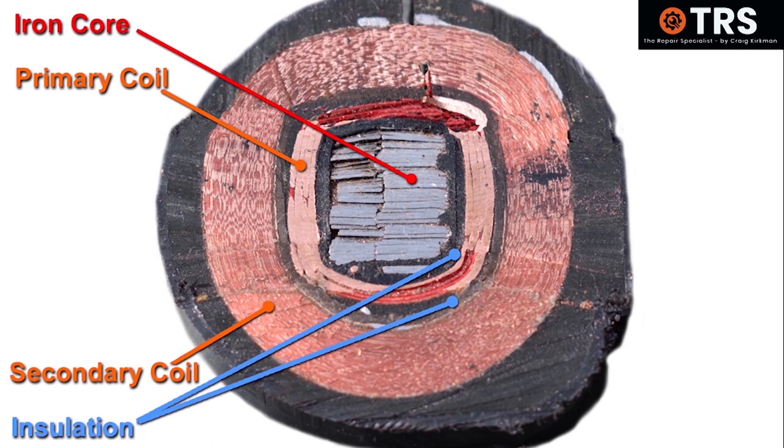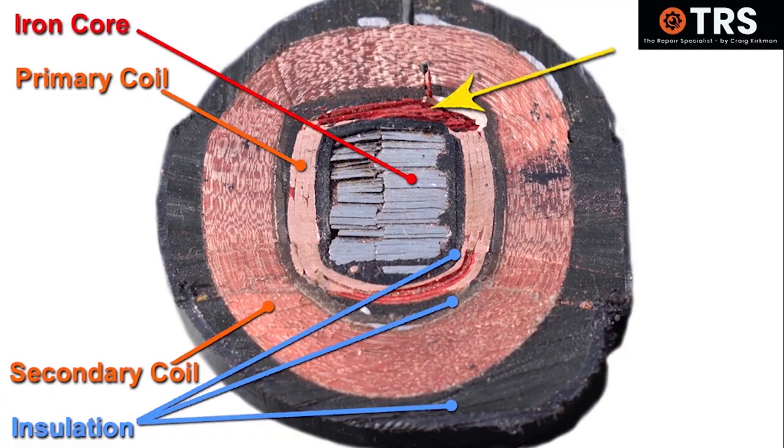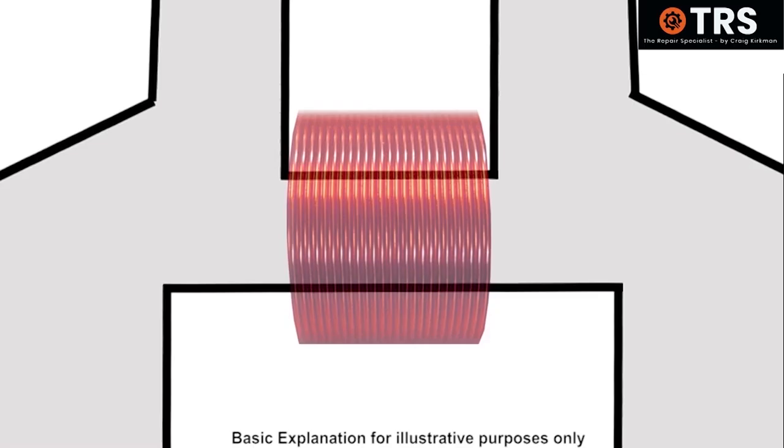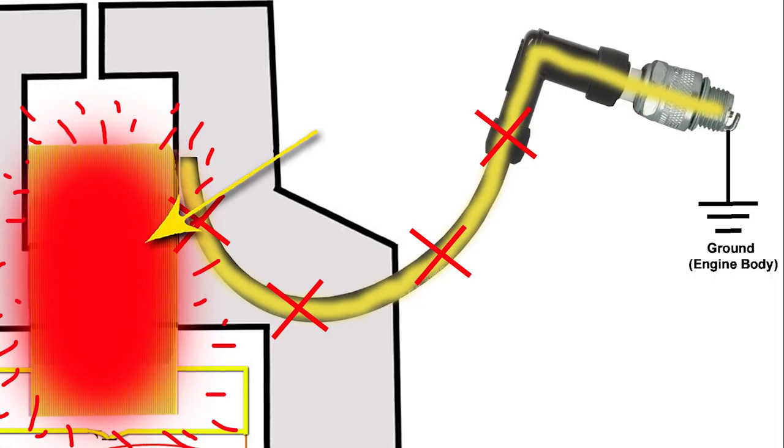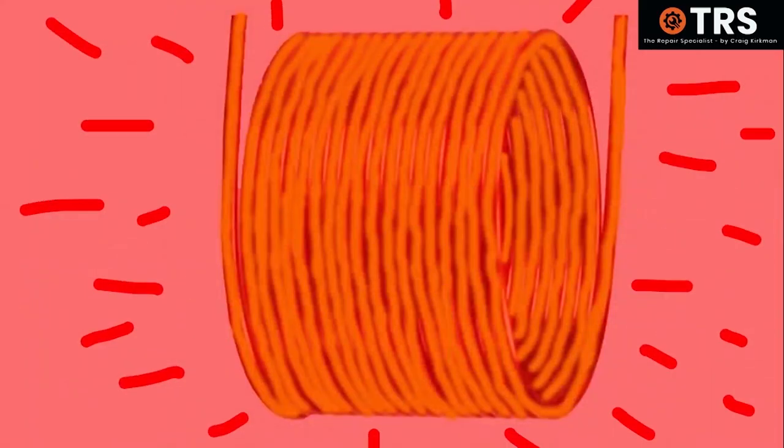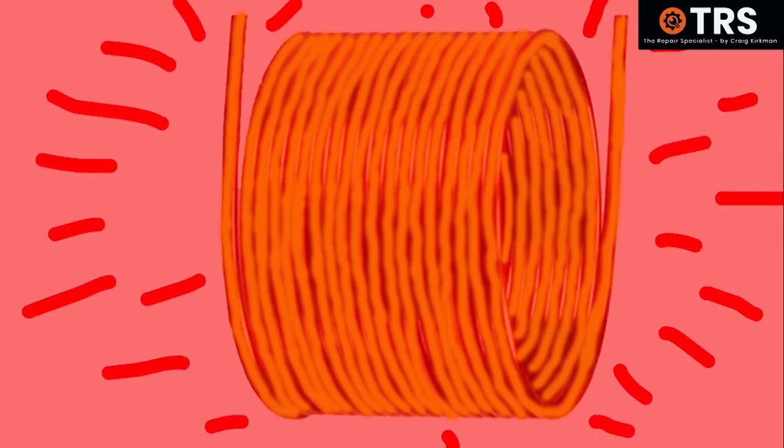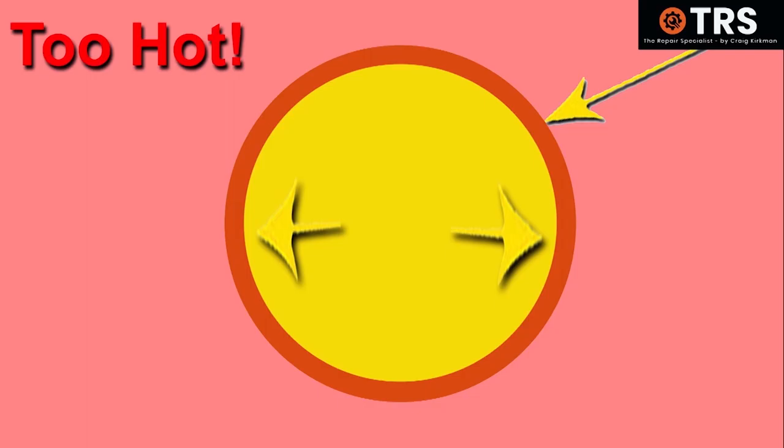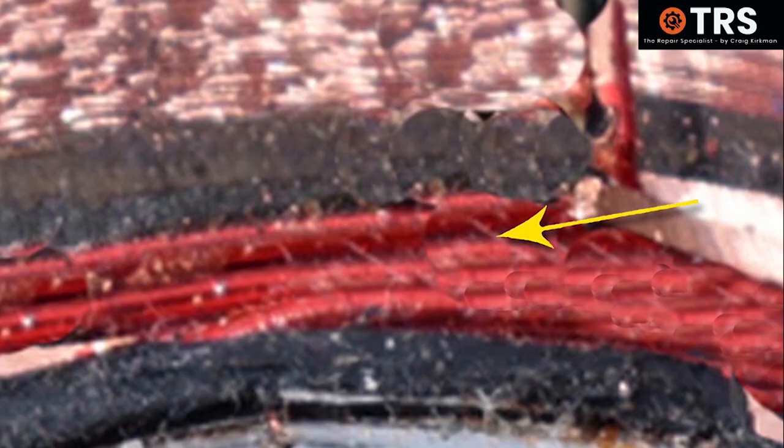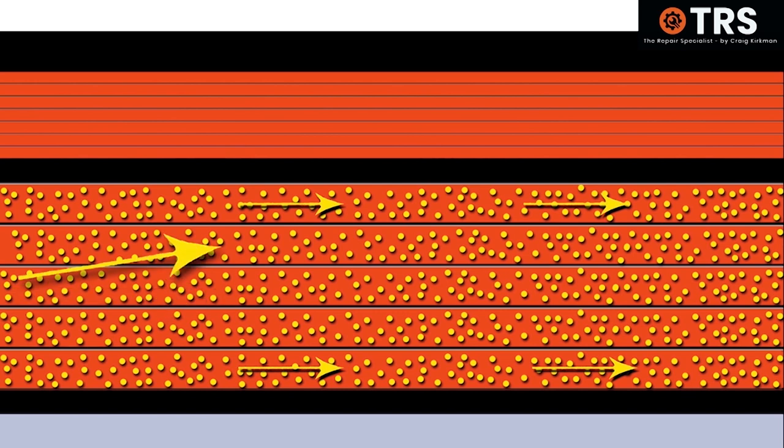And then we have the outer insulation encapsulating everything. The wire that makes up the coil windings is also insulated itself. It has an outer insulation like this. So the heat produced can be unbearable to the coil, and that no doubt could affect the integrity of the insulation within the coil.